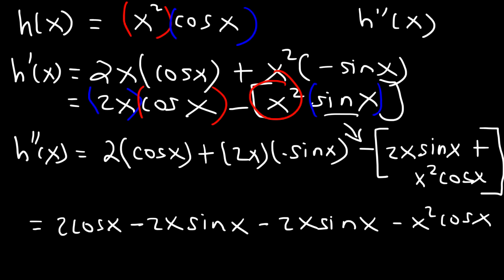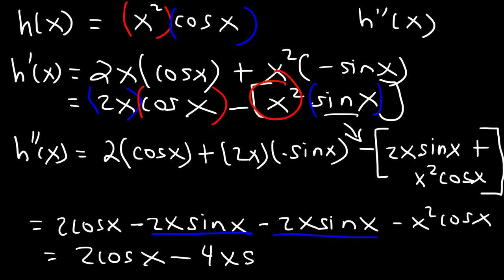So it looks like we can combine like terms. So the final answer is going to be 2 cosine x minus 4x sine x minus x squared cosine x. So that's h double prime.